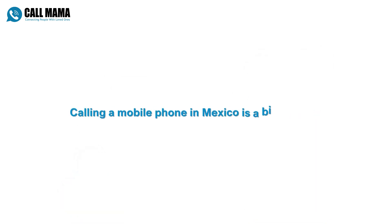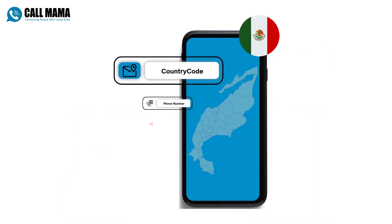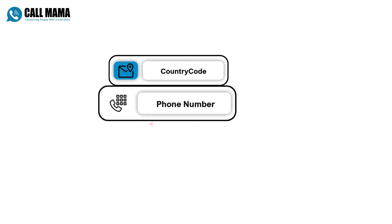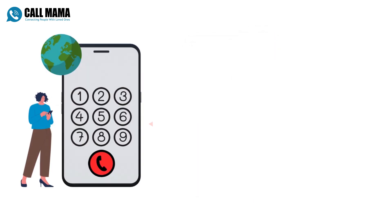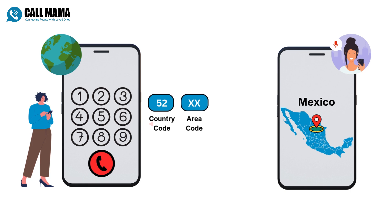Calling a mobile phone in Mexico is a bit simpler. You'll just need to add the country code to the phone number. For example, if you're calling a mobile phone in Mexico, you would dial 52 plus the 8-digit phone number.